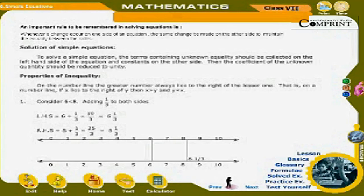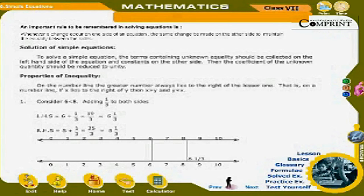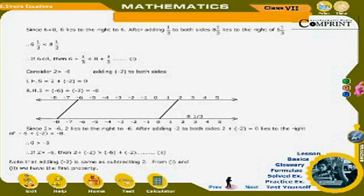Properties of inequality. On the number line, the greater number always lies to the right of the lesser one — if x lies to the right of y, then x > y and y < x. For example, consider 6 < 8. Adding 1/3 to both sides: LHS = 6 + 1/3 = 19/3 = 6⅓; RHS = 8 + 1/3 = 25/3 = 8⅓. Since 6 < 8, after adding 1/3 to both sides, 8⅓ lies to the right of 6⅓, so 6⅓ < 8⅓.